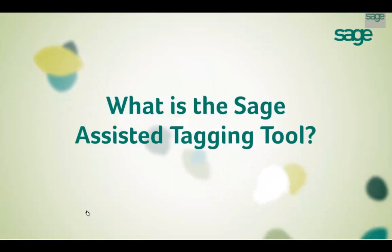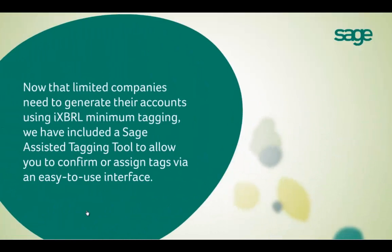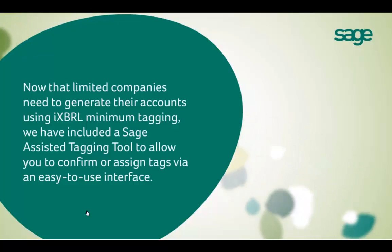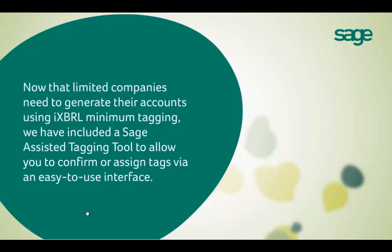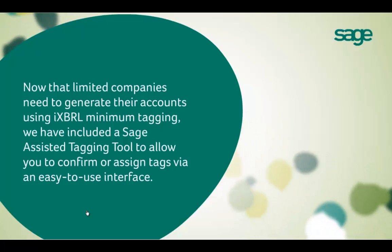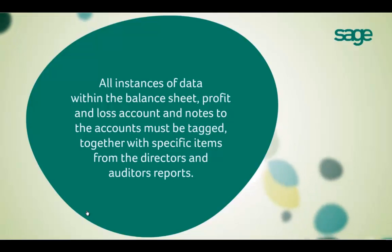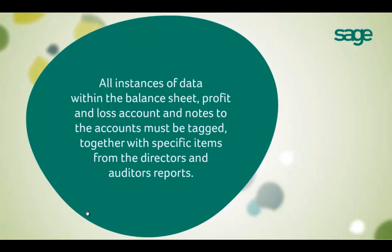HMRC has changed the requirements so that as of April 2013, limited companies need to generate their accounts using IXBRL Minimum Tagging. We want to make complying with these rules as simple as possible, so we have developed the Sage Assisted Tagging tool, which is included as standard in our entire accounts production range. This allows you to confirm or assign tags with an easy-to-use interface.